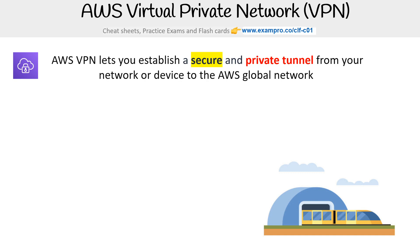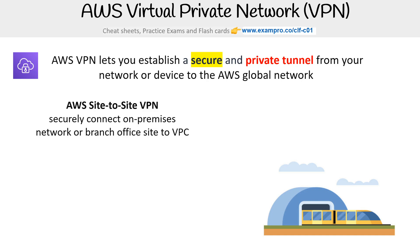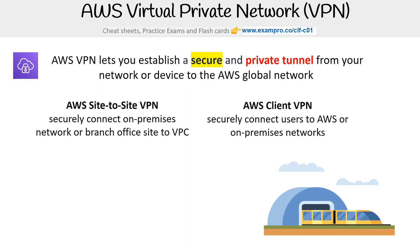There are two options here. We have AWS Site-to-Site VPN, which securely connects an on-premises network or branch office site to a VPC, and AWS Client VPN, which securely connects users to AWS or on-premises networks.